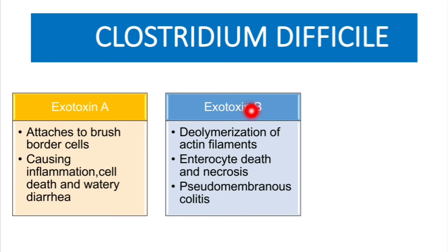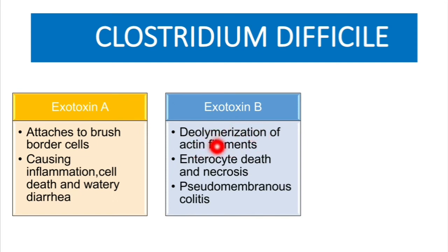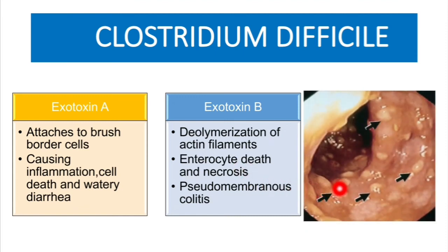Exotoxin B causes depolymerization of actin filaments. This depolymerization leads to enterocyte death and necrosis. The clinical feature caused by Exotoxin B is pseudomembranous colitis, which on endoscopy has a characteristic appearance shown here.